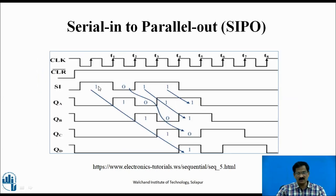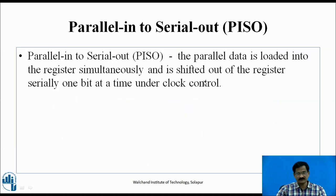In Serial-In to Parallel-Out, at the arrival of each clock pulse T1, T2, T3, T4, we load the data serially as 1, 0, 1, 1. At the completion of the clock pulses, the data available at QA, QB, QC, QD simultaneously is 1, 0, 1, 1.